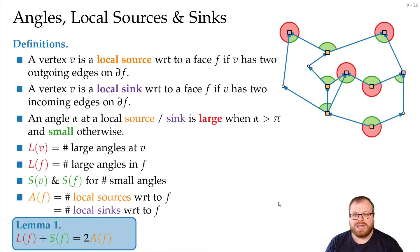And the main question we want to ask ourselves is now, if we have an embedding, we know where the global sources are, we know where the local sources are, but we don't know yet which of these angles become small and which of these angles become large.